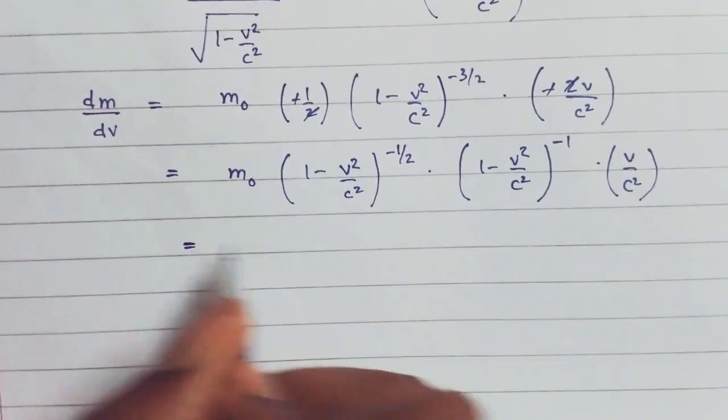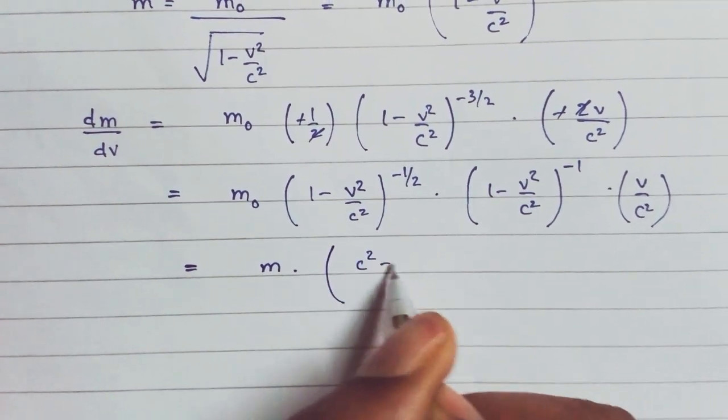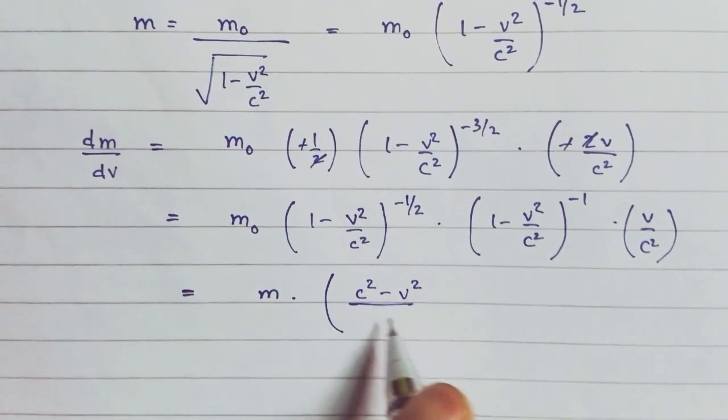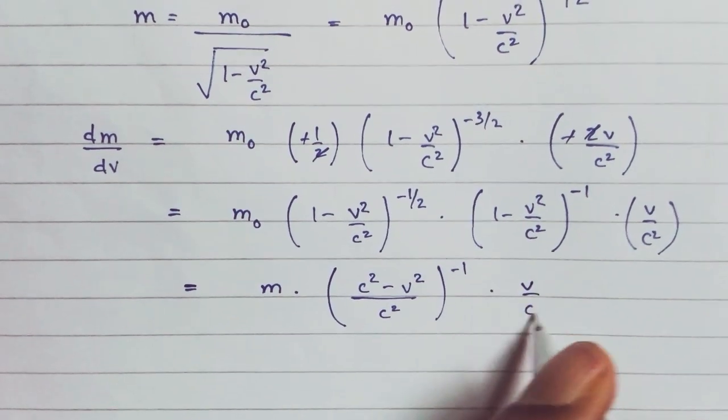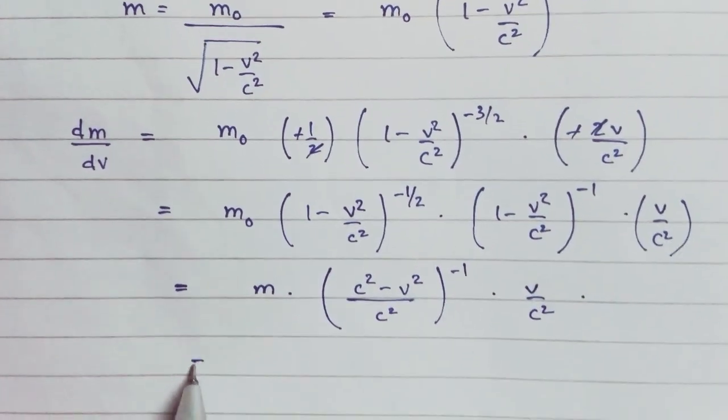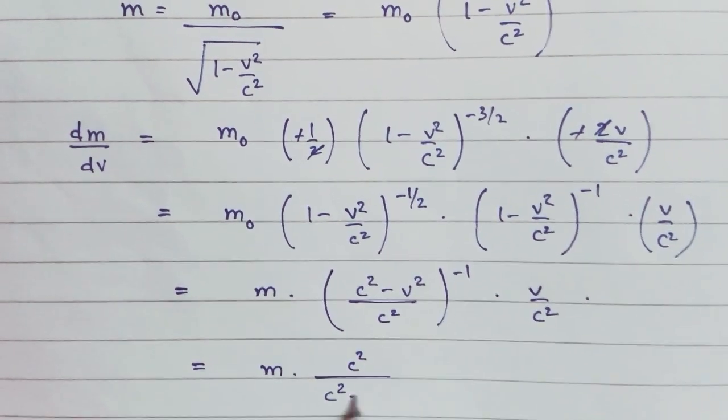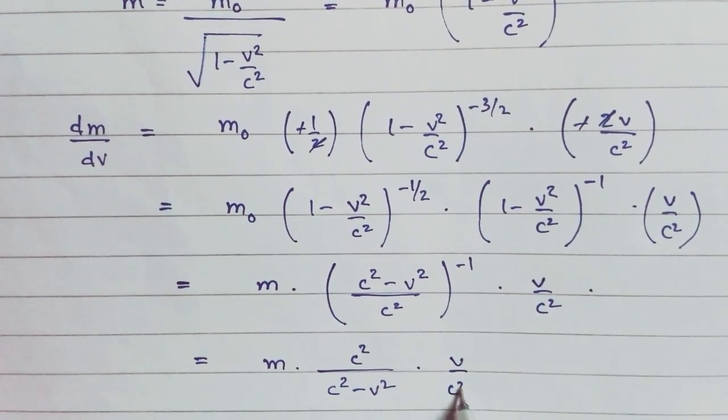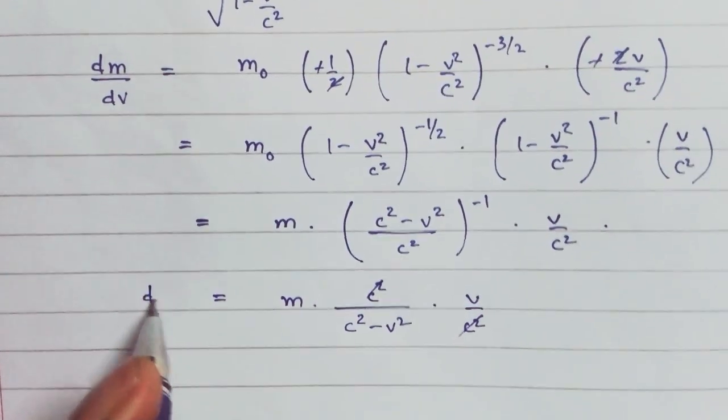We'll get M times, now we take the LCM, so we'll get C squared minus V squared by C squared, inverse, times V by C squared. Taking the inverse, we get C squared by C squared minus V squared times V by C squared. The C squareds cancel, so this is dm by dv.